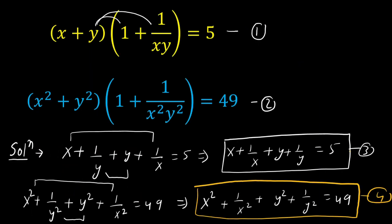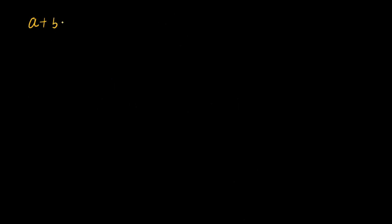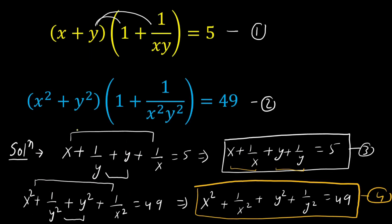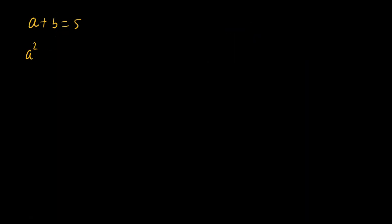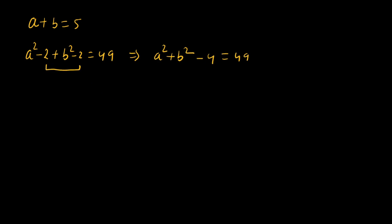In equation 3, replacing x + 1/x with a and y + 1/y with b gives a + b = 5. In equation 4, replacing x² + 1/x² with a² - 2 and y² + 1/y² with b² - 2 gives (a² - 2) + (b² - 2) = 49, which implies a² + b² = 53.